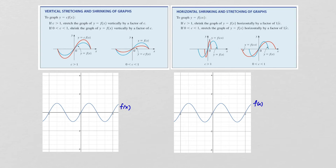For example, if we have our function f(x) here with this graph, and I wanted to know what 2·f(x) would look like, that is going to stretch the graph vertically by a factor of 2. So basically every point is going to get twice as tall. The origin point stays where it is. A point with a height of 1 is now going to have a height of 2. Any point on the x-axis stays on the x-axis. A point with a height of -1 is going to now have a height of -2. So it gets stretched by a factor of 2.